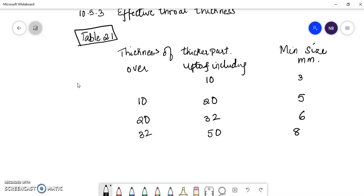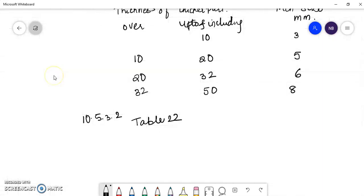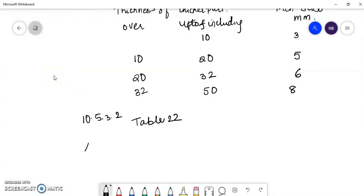This is clause 10.5.3.2 and the k is given in table 22. So we have a table like this which is angle between fusion faces and the constant k. So we have 60 degrees to 90 degrees,